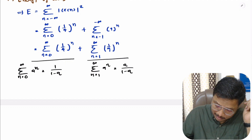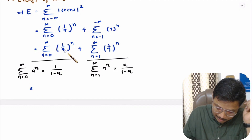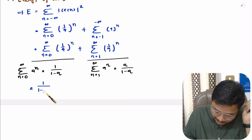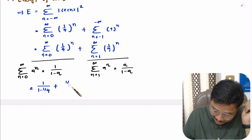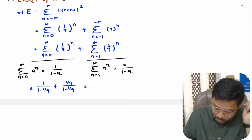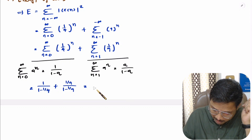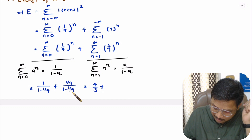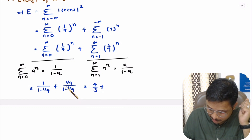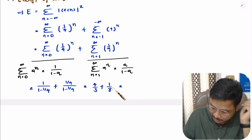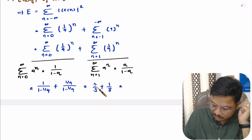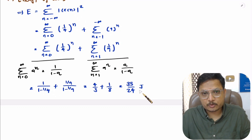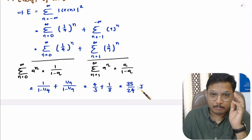Applying these calculations: the first term gives 1 divided by (1 minus 1/4), which equals 1 divided by (3/4), that is 4/3. The second term gives (1/9) divided by (1 minus 1/9), which equals (1/9) divided by (8/9), that is 1/8. Adding these: 4/3 plus 1/8 equals 32/24 plus 3/24, giving energy equal to 35/24 joules. Since energy is finite, power is zero.